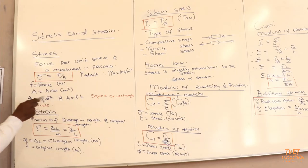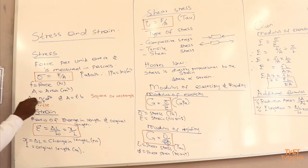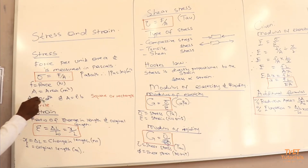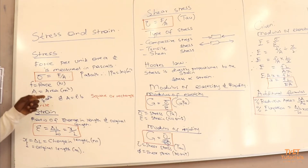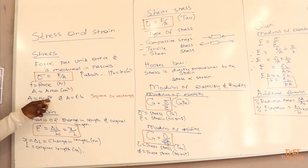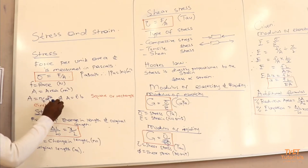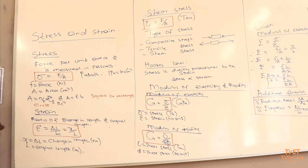If the stress is applied on a circle, the formula for the area of the circle is πD²/4, where D is the diameter. We can also use πR² for the area of the circle, measured in m².